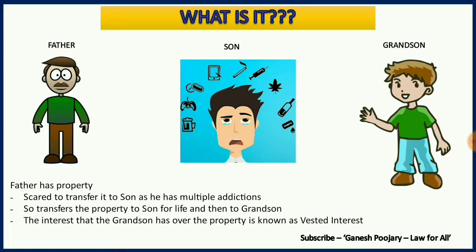When we studied section 13, we discussed about unborn persons. The property can be transferred to an unborn person with a prior interest. But the vested interest for that particular unborn person comes into reality only when he is born. Once born, he gets vested interest over the property. If a timeline is mentioned — such as attaining five, ten, or eighteen years — then he gets vested interest immediately after birth. Or there may be a direct transfer immediately after birth, in which case there is no question of vested interest — he gets absolute interest right away.